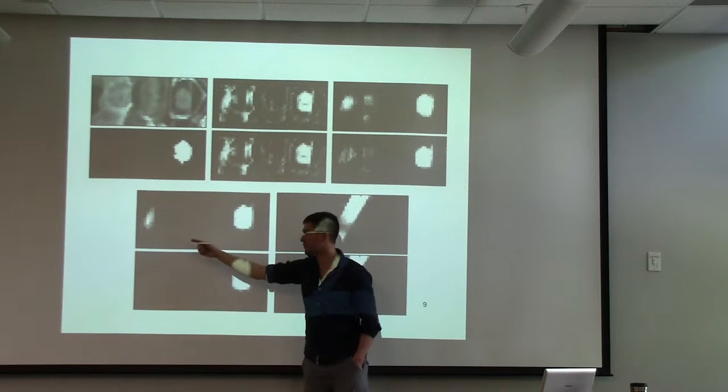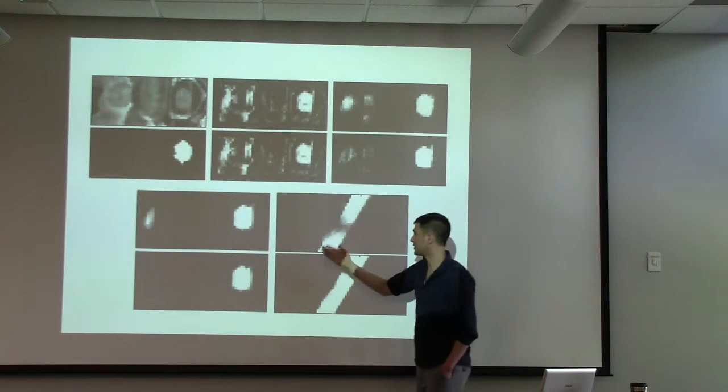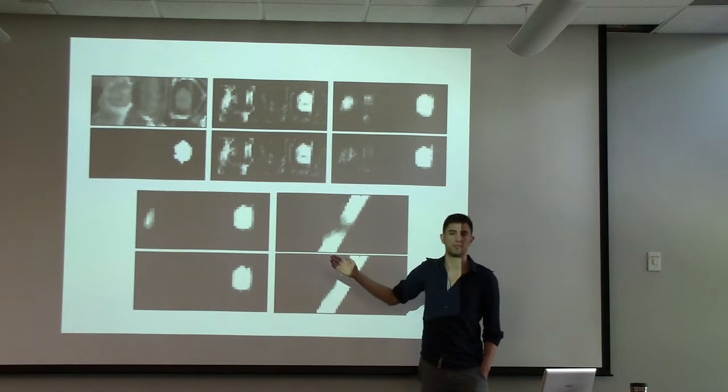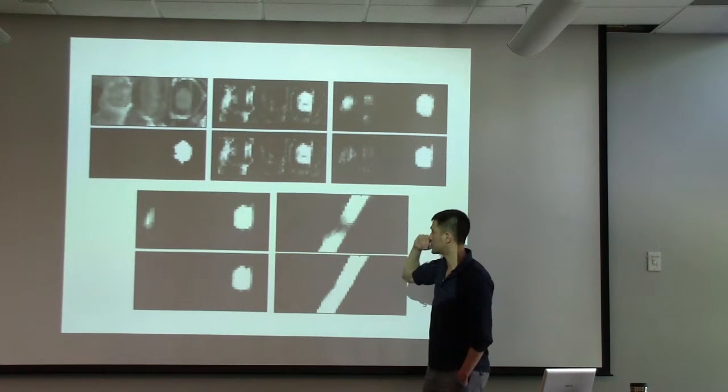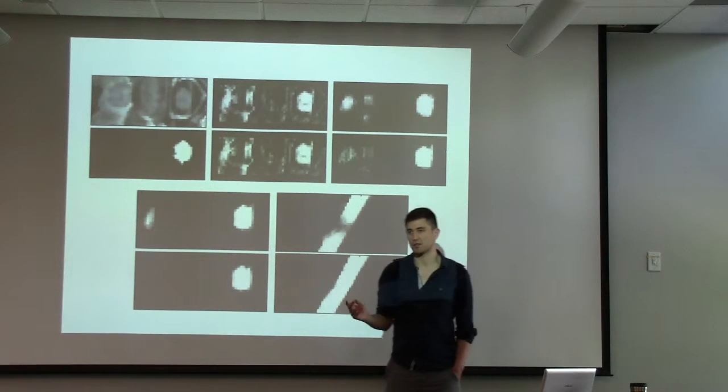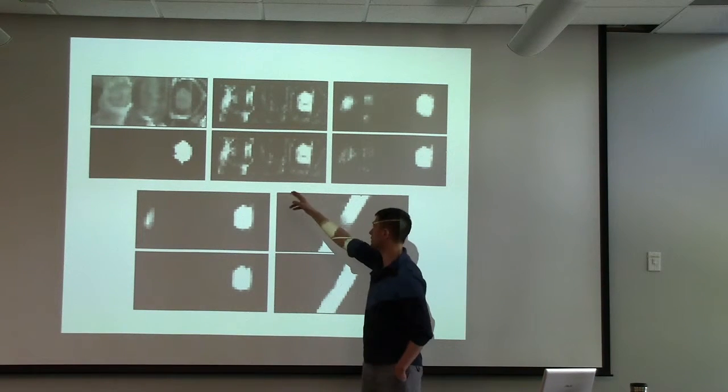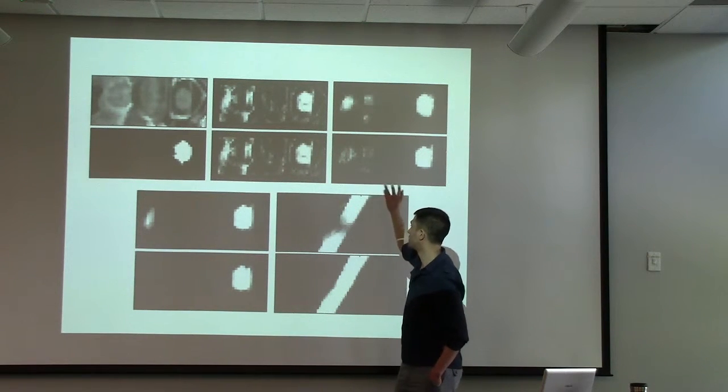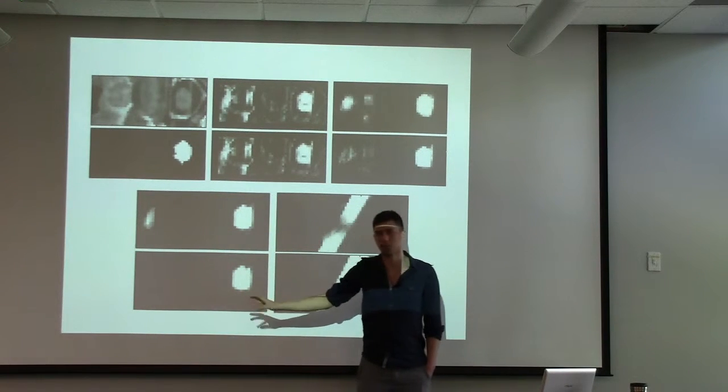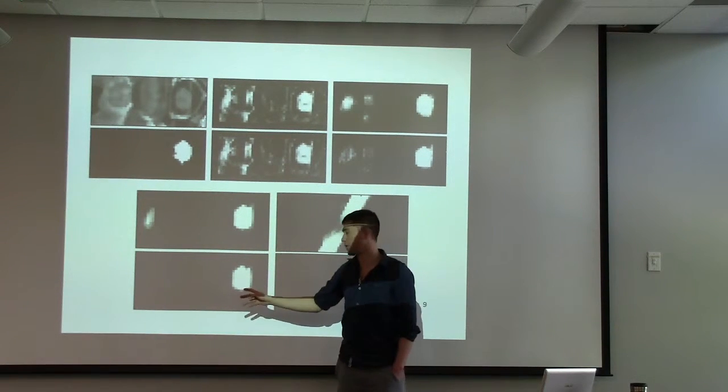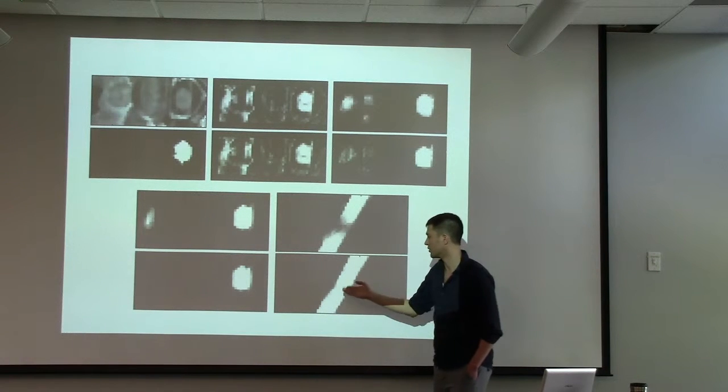When we added these global geometric features, you can see that the first iteration is the same, starts to regularize a little bit better. By the end of it, it removes the false positive and it got rid of those false negatives in the middle as well.